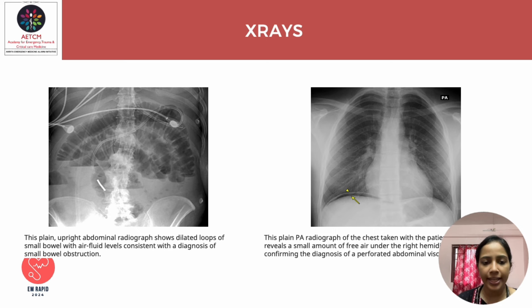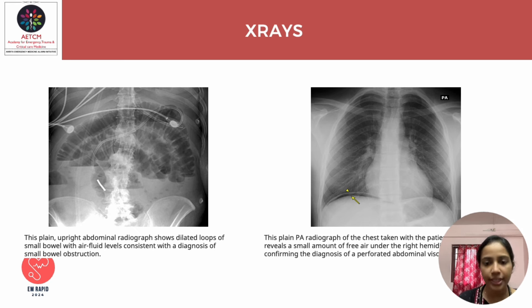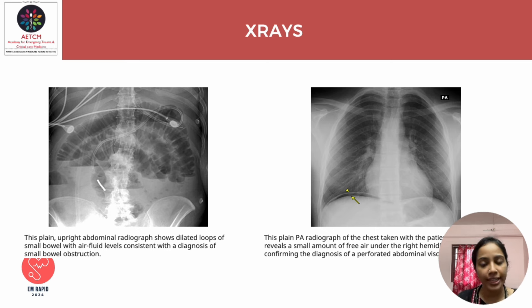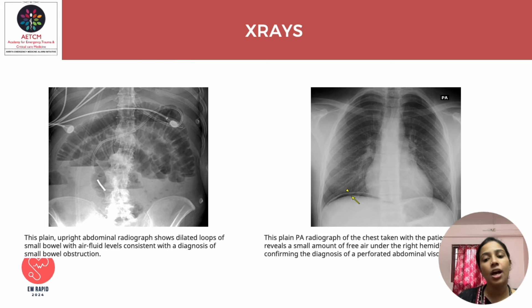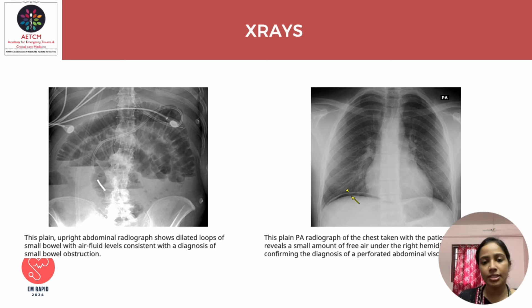The first X-ray shown is an upright abdominal view — the classical X-ray of intestinal obstruction showing dilated bowel loops with multiple air-fluid levels. More than three air-fluid levels suggests intestinal obstruction. The second X-ray is a chest PA view showing air under the right hemidiaphragm, indicating a perforated abdominal obstruction. These are the two key X-ray findings to remember.